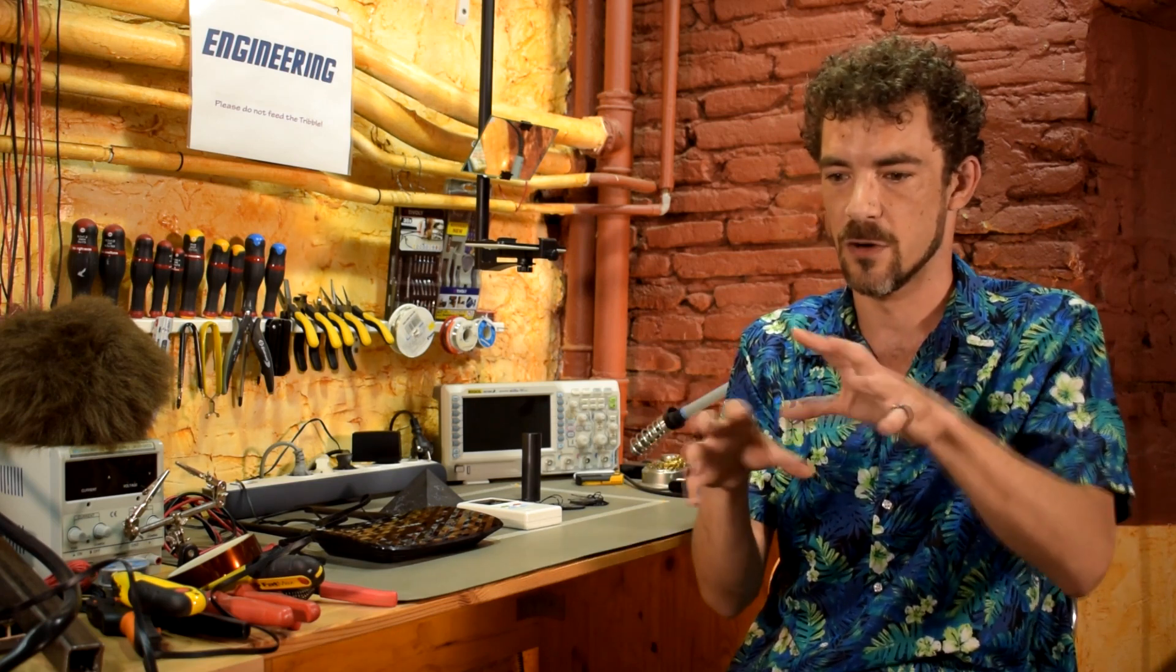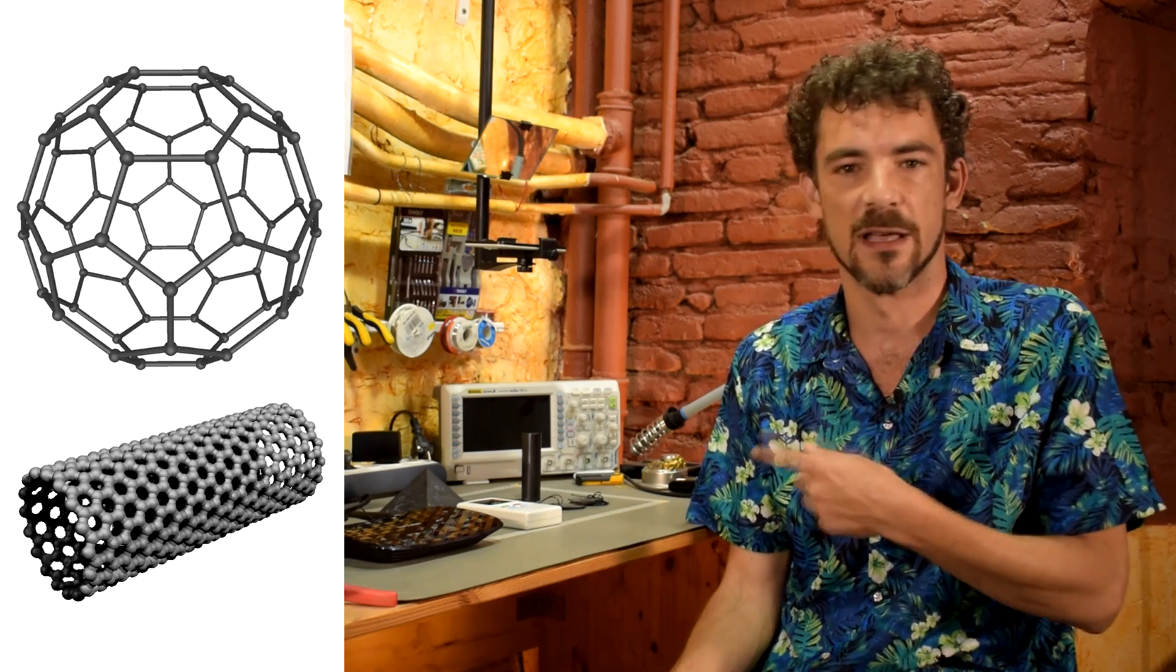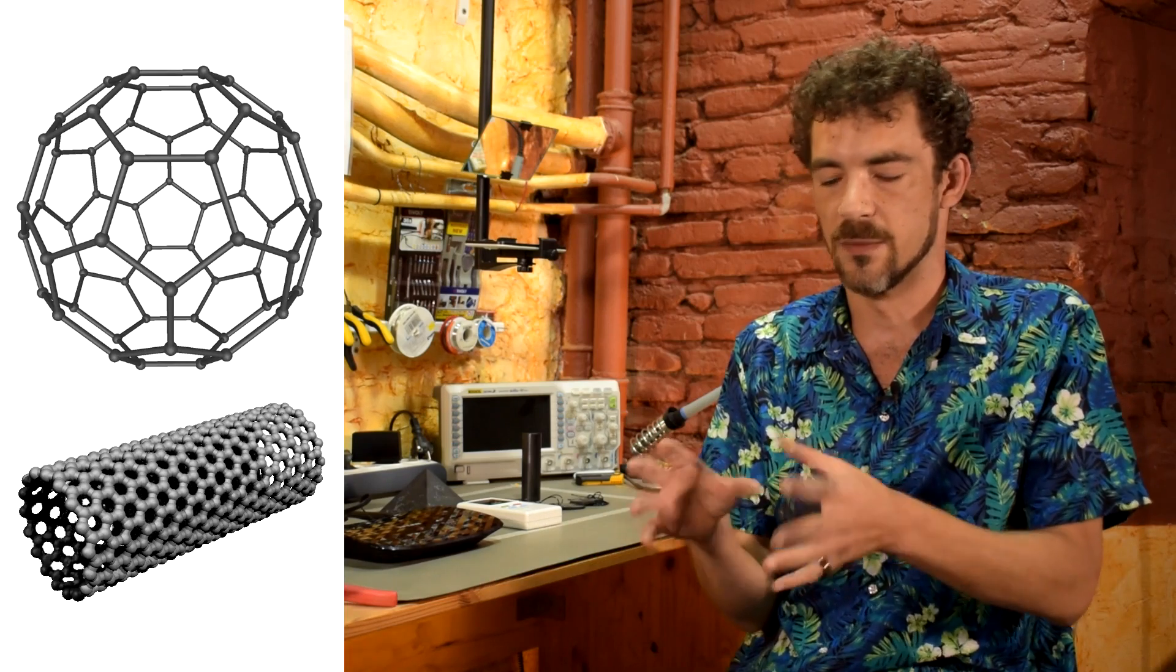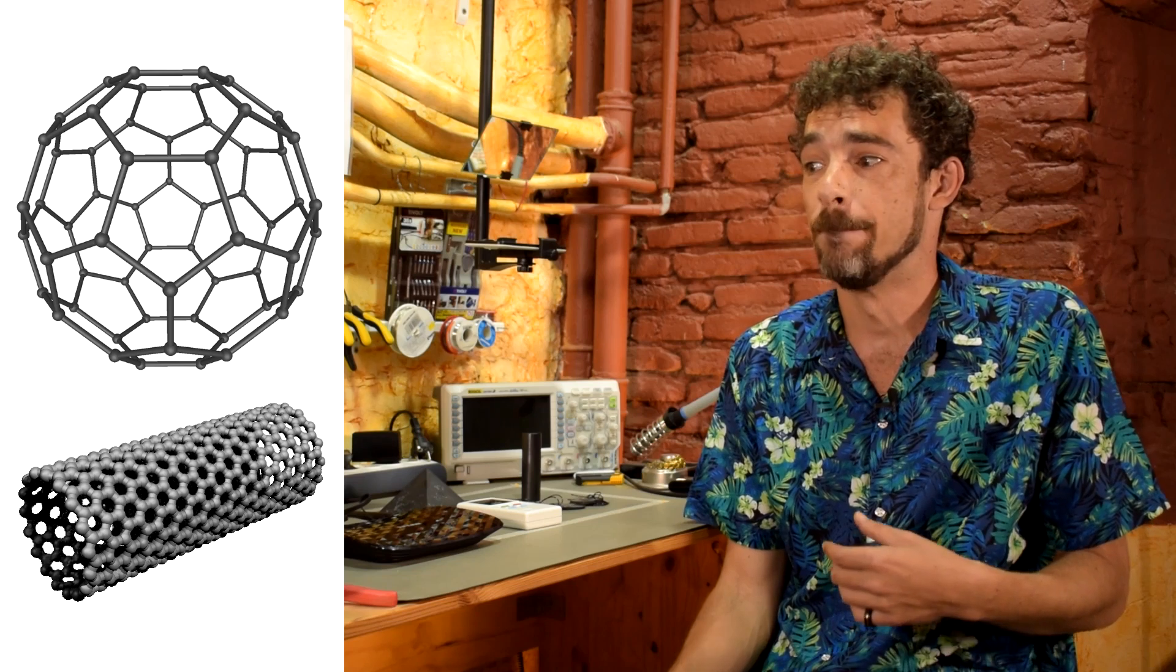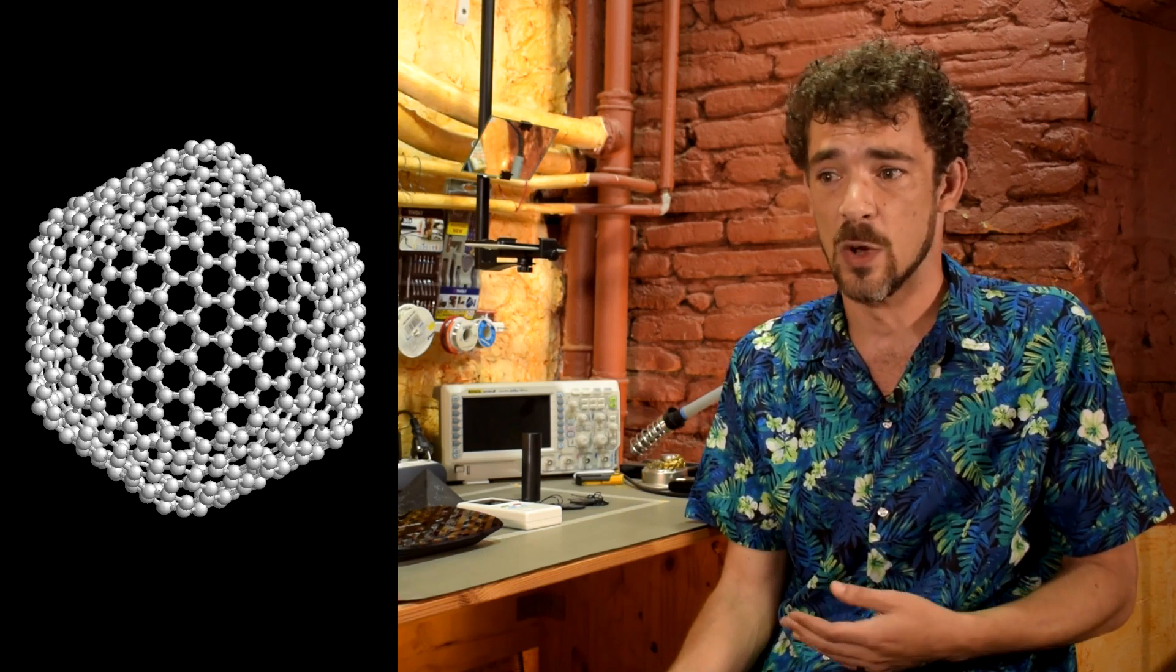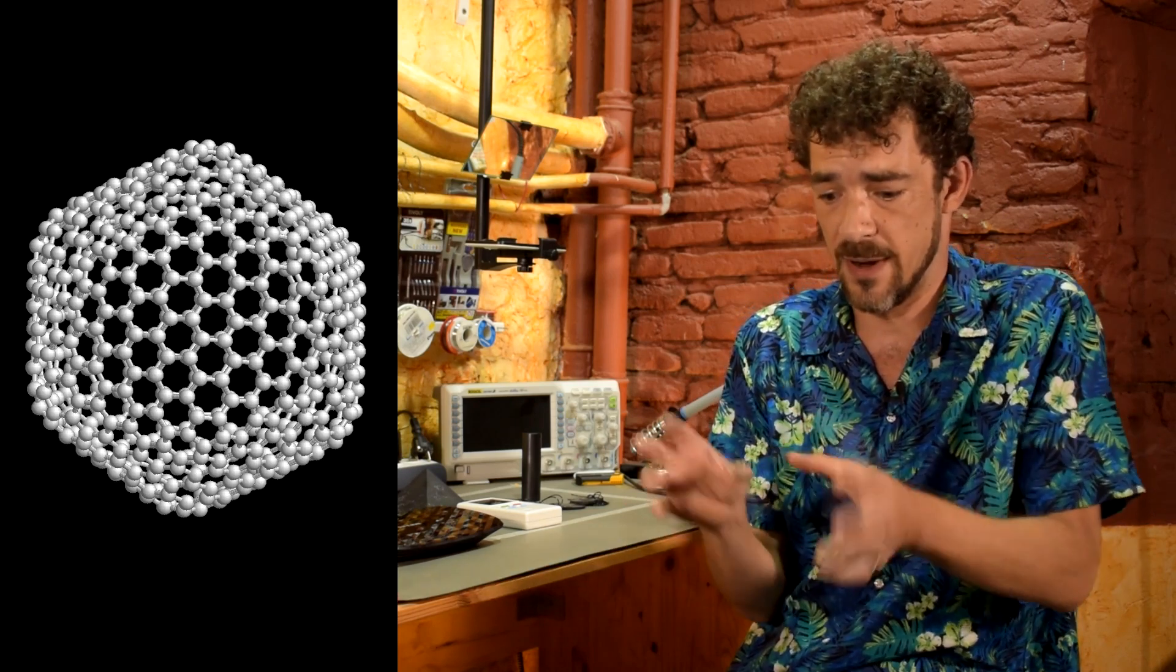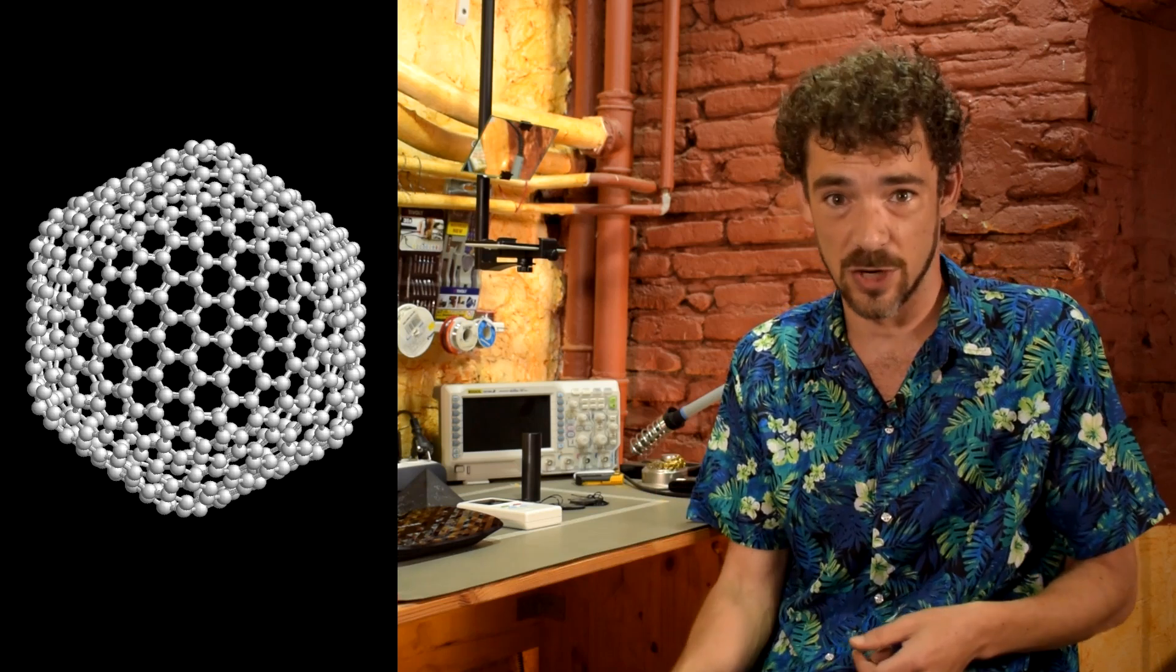It gets even hairier because Shungite is supposed to contain something called fullerenes. Fullerenes are basically just a bunch of carbon atoms that are arranged together with bonds between the carbon atoms. It can look like these structures - you can have sort of a quasi-spherical structure, you can have tubes like carbon nanotubes. You can have even bigger spheres, and so the point is you have these carbon atoms and they arrange themselves in three-dimensional geometric structures. Just because something has fullerenes doesn't mean it's magical, because fullerenes vary. Depending on the fullerene you're talking about, it can either be an insulator, it can be a conductor, and some fullerenes are even superconductors.